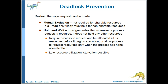Deadlock prevention involves preventing one of the four necessary conditions from holding. Remember: mutual exclusion, hold and wait, preemption, and circular wait. Mutual exclusion would be applicable to resource types that can be shared — the example given here is read-only files. It wouldn't work for everything; think about files that you're writing to, for example.